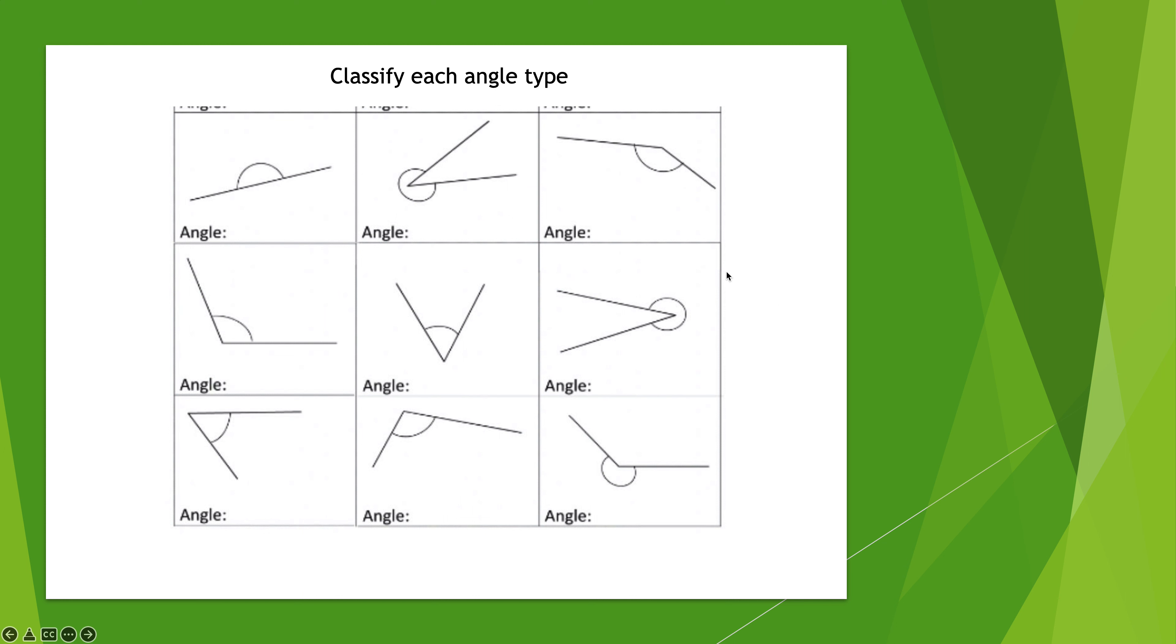This angle right here in the upper left hand corner, this is a straight angle. Center top, that's a reflex angle, goes all the way around. The upper right would be an obtuse angle.